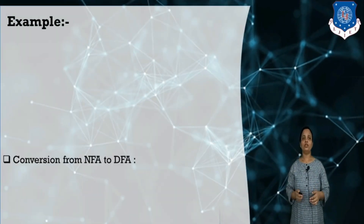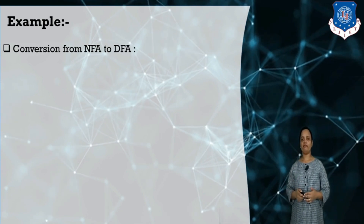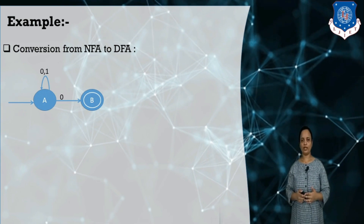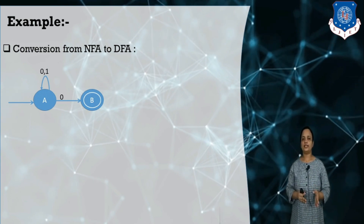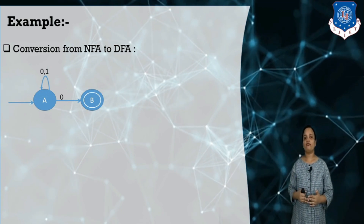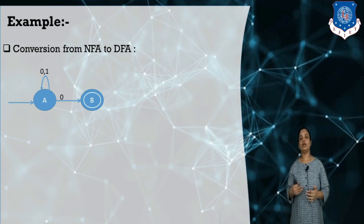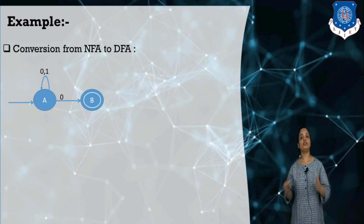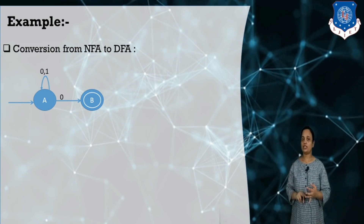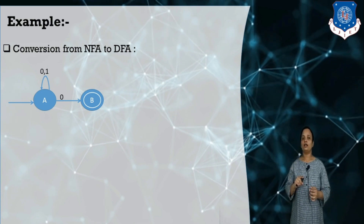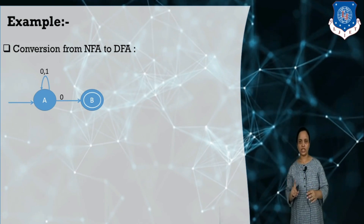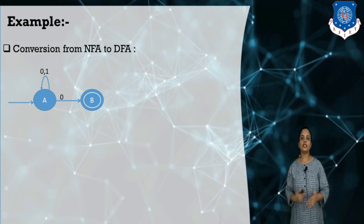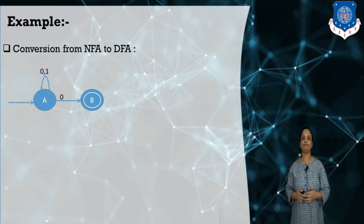Let us understand this method by using the example. We have to convert the given NFA to DFA. In DFA there are two main conditions: first, for every input symbol from every state we need to show the transition; and second, for every input symbol there exists only one specific path — from a given state we move to only one state, not more than one. By using the subset construction method we can convert the NFA to DFA.